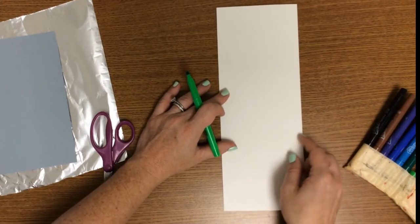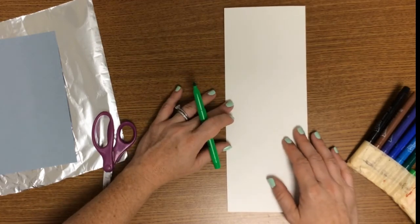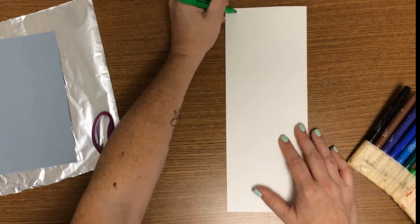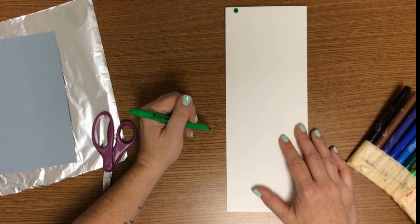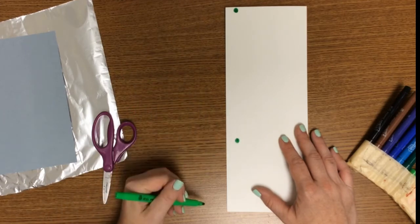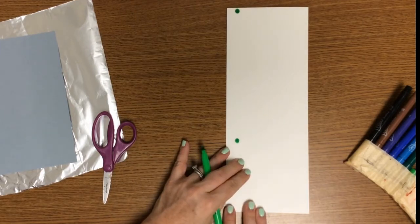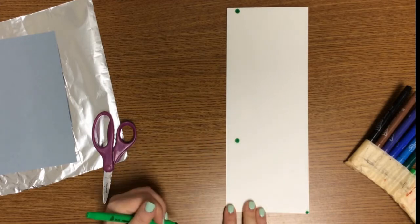Double check that you have the fold on the right and the open part on the left. The first thing we're going to do is make a dot here, and then another one here, and then another one more towards the middle here.